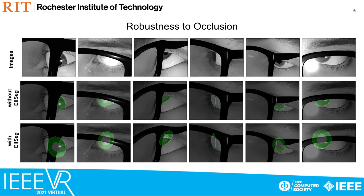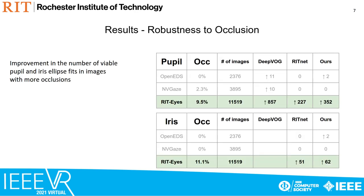Segmented eye parts are sensitive to occlusions. Tasking the neural network to predict elliptical shapes over occluding artifacts increases the number of support pixels to generate viable ellipse fits. This effect is particularly pronounced for datasets which exhibit larger proportions of occlusion.